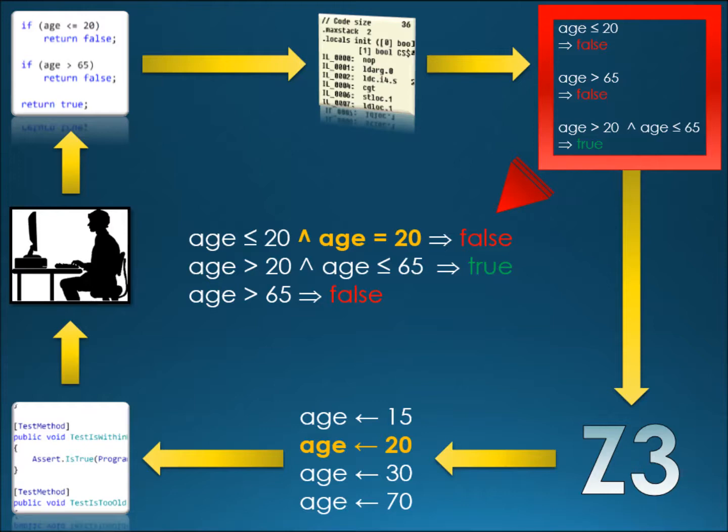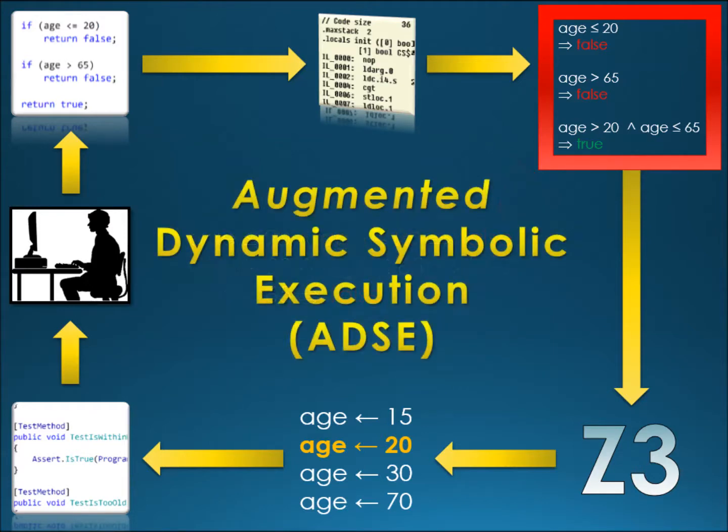Just before the constraints are fed to the constraint solver to be solved, they undergo augmentation. In our example, the augmentation that gives us input at the boundary 20 is highlighted on the slide with orange color. This simple idea is what we call the Augmented Dynamic Symbolic Execution or ADSE for short.